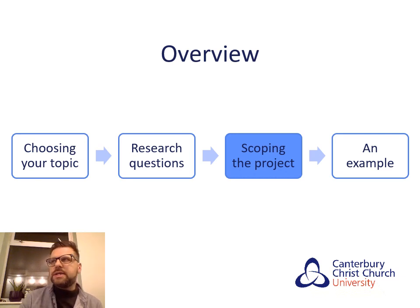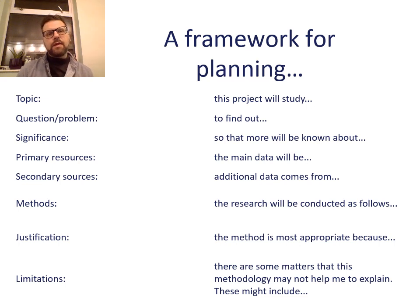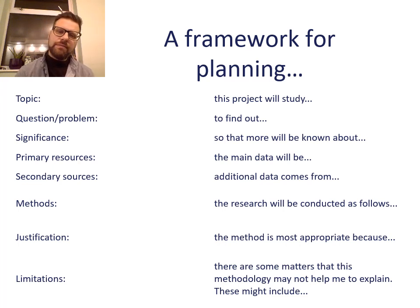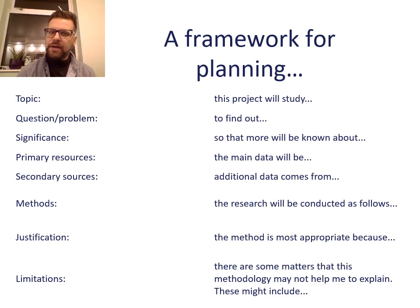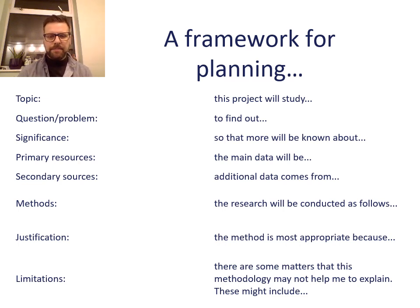There's quite a bit more we might want to do — let's scope out our projects. The first thing to think about is the topic: 'This project will study...' followed by the question or problem: '...in order to find out...' Then we think about significance: '...so that more will be known about...' And what resources we're going to use: the primary data will be this, the secondary sources or additional data will come from there. Then you want to say something about your methods — how will the research be conducted — and justify those methods: why is this method the right one? Finally, talk about limitations: what will this study not include, what will it not answer?